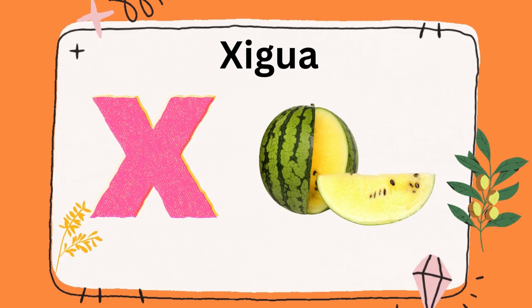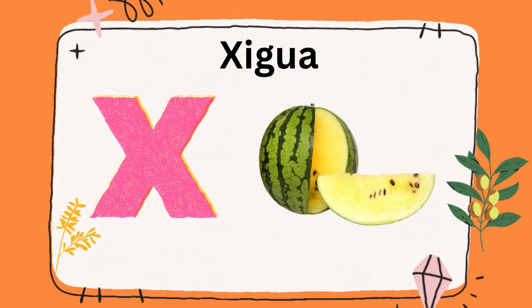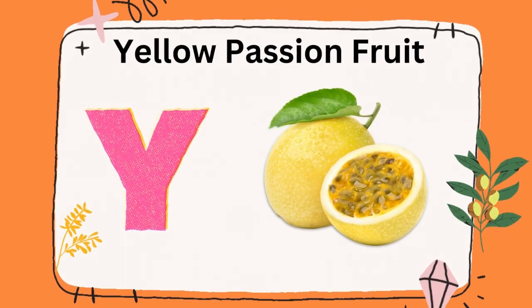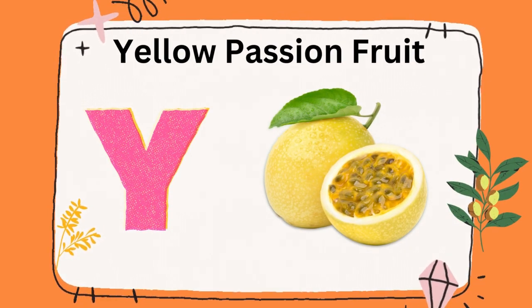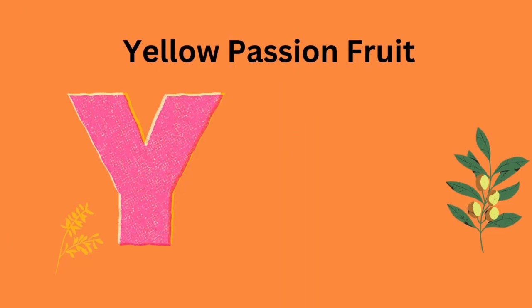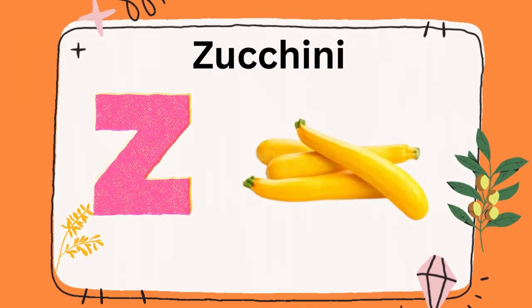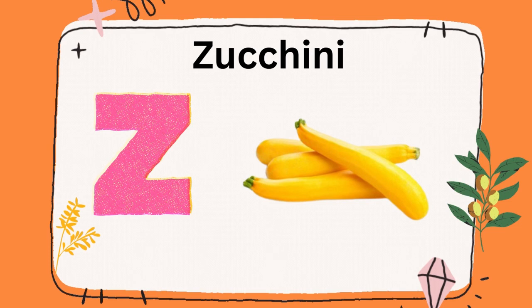X is for zigua, zigua. Y is for yellow passion fruit, Y is for yellow passion fruit. Z is for zucchini, zucchini.